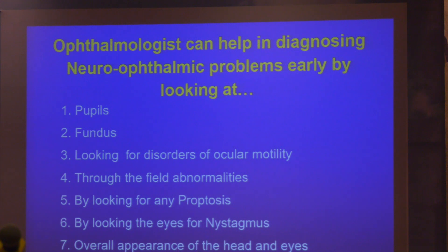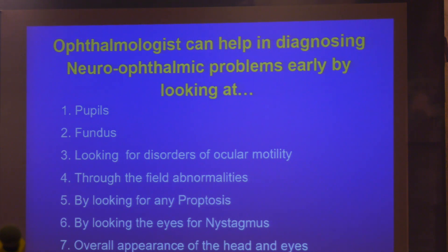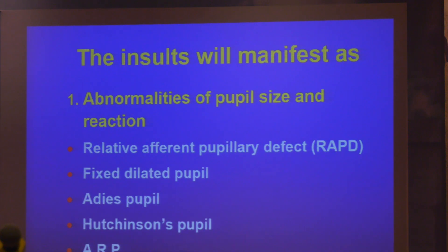How do we make a diagnosis? These are the seven ways we should examine cases: pupils, fundus, disorders of ocular motility, field anomalies, proptosis of neuro-ophthalmic interest, nystagmus due to neuro-ophthalmic causes, and overall appearance of the head and eye. For the pupil, at 2.5 to 3 mm, pupils are centrally located, reacting directly to normal light and consensually, which is normal.